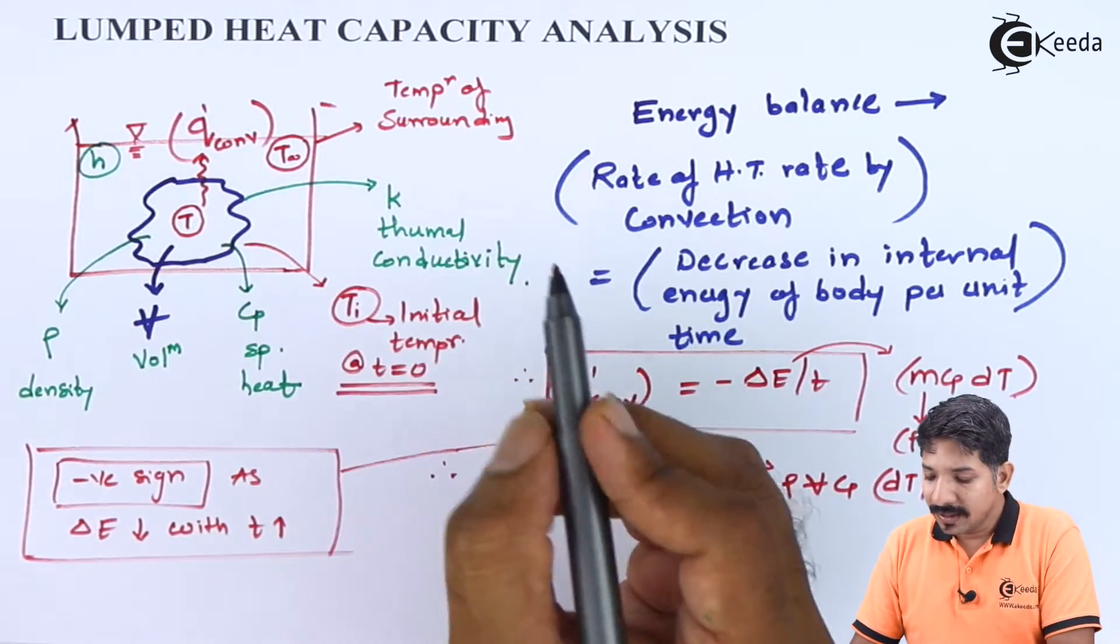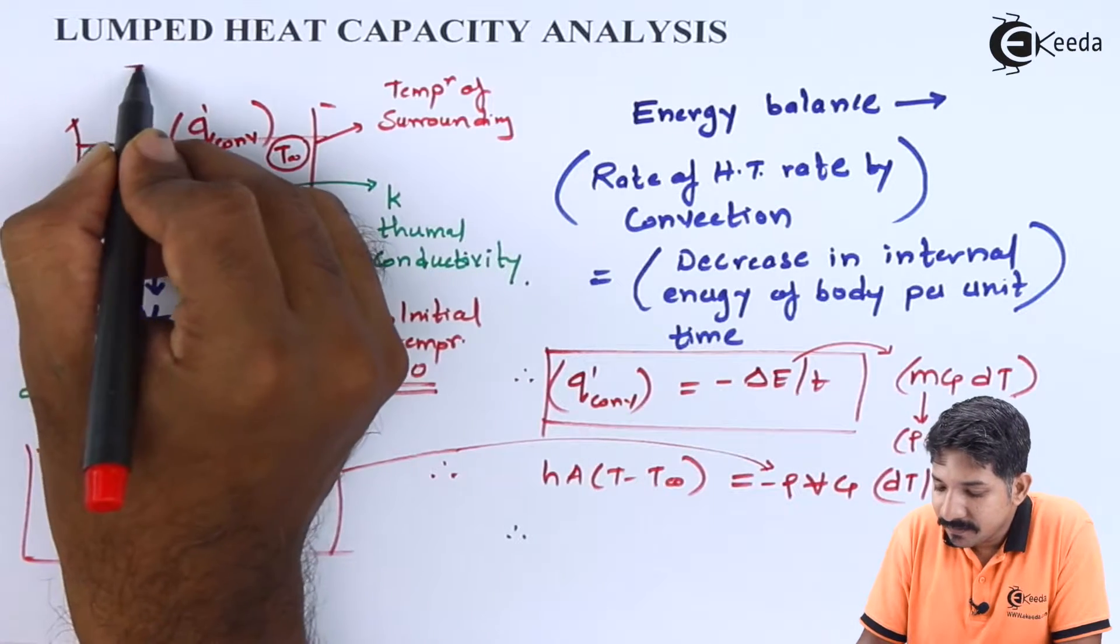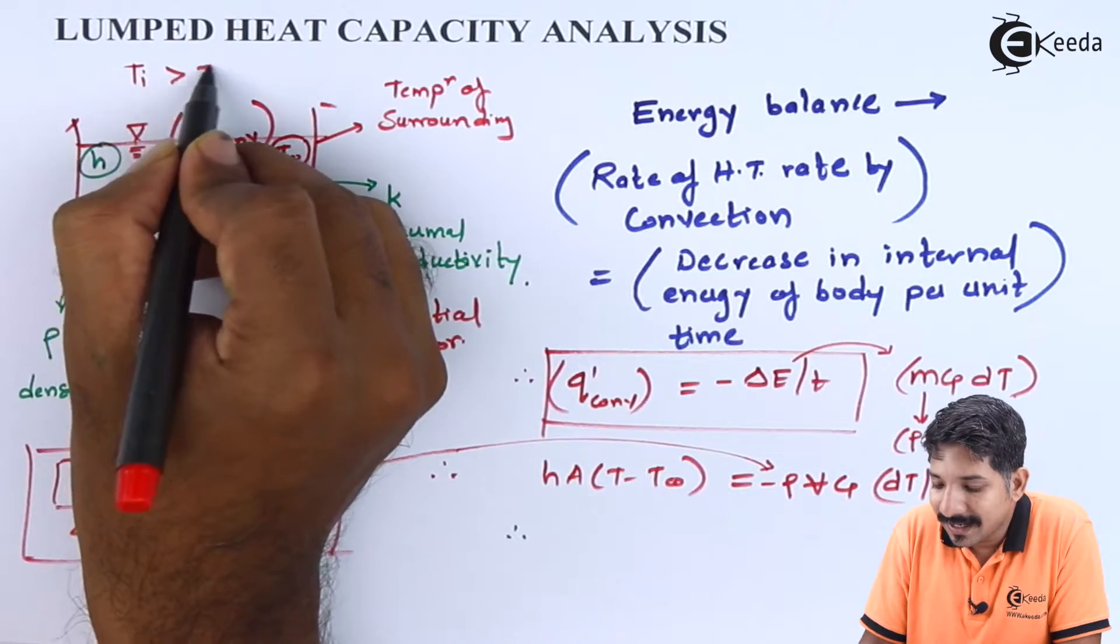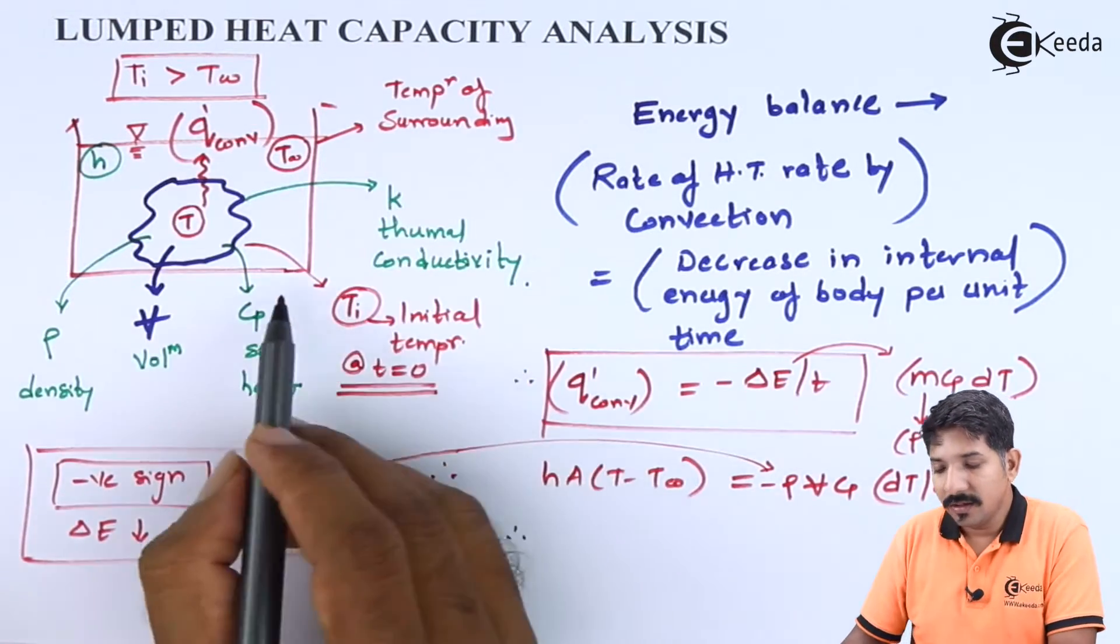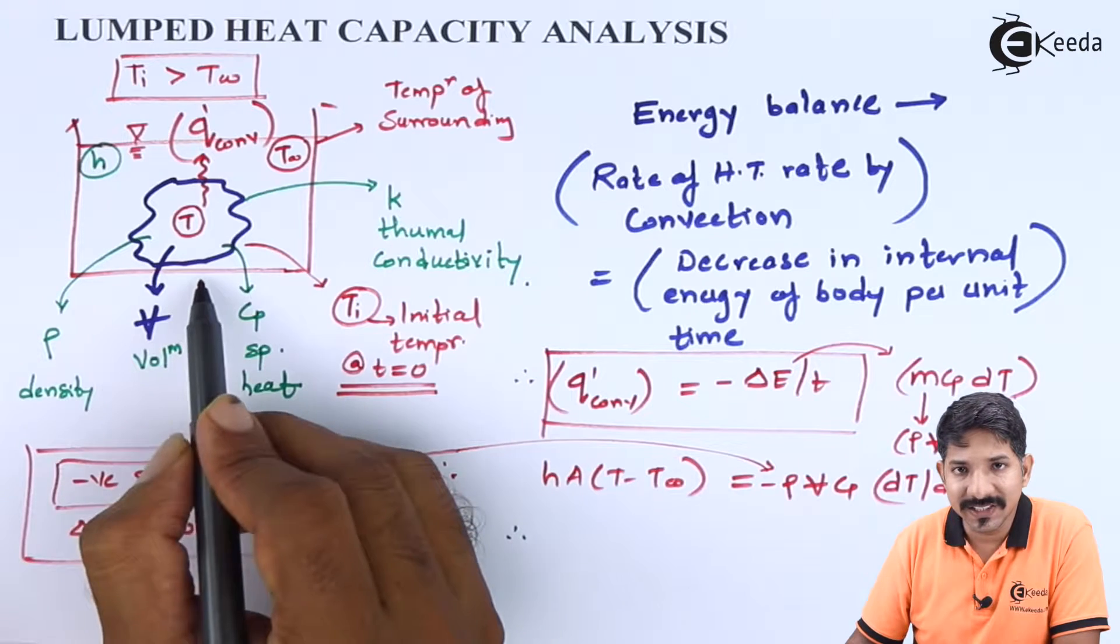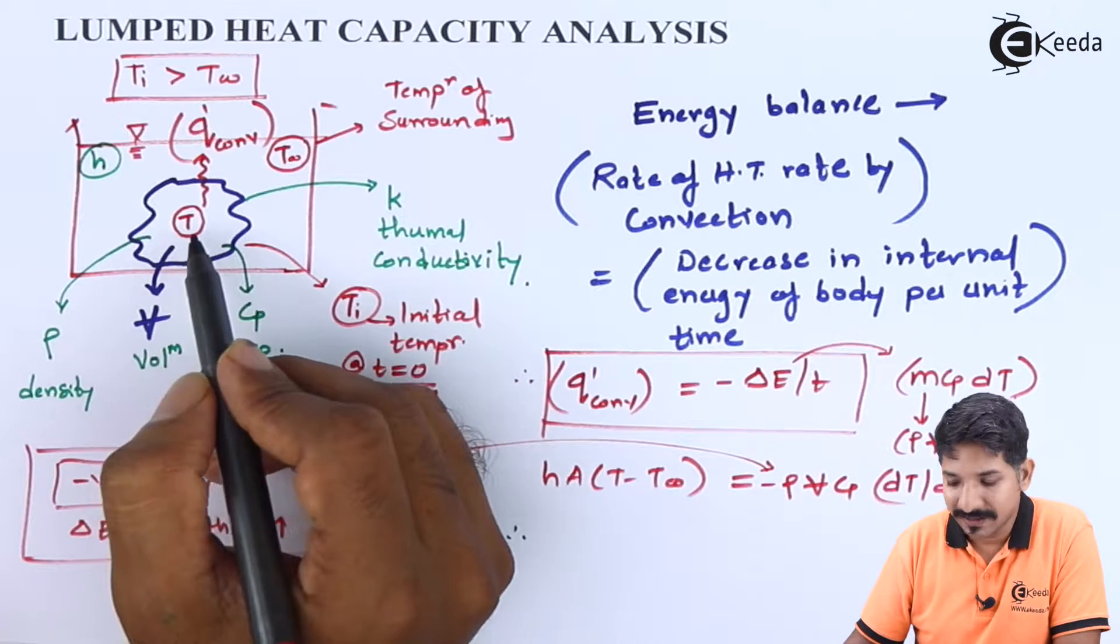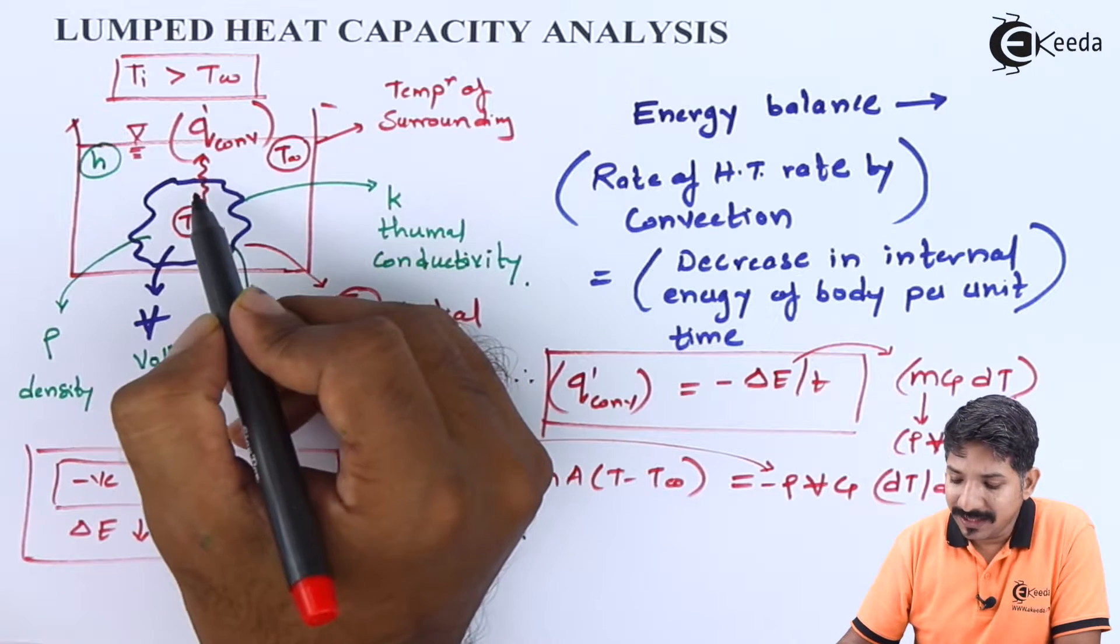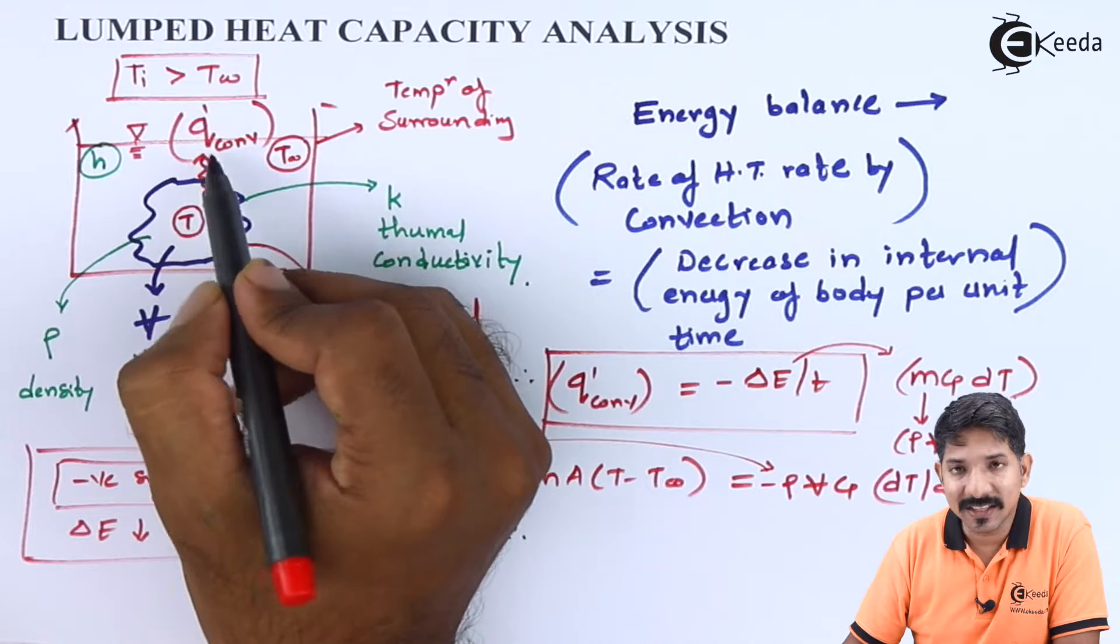we will assume that Ti is greater than T infinity, means my body was hotter initially and that body is kept under a cooler surrounding. If this is the case, obviously the heat will be sent to the surrounding. Let us say the heat that is sent to the surrounding is Q'.